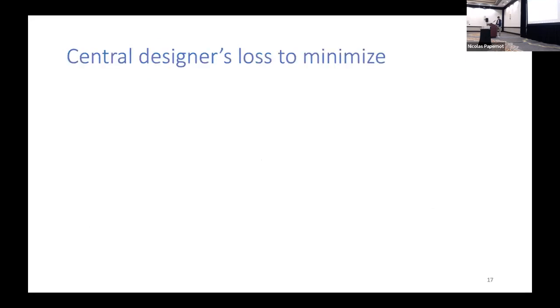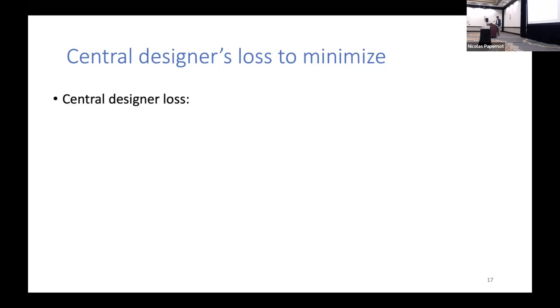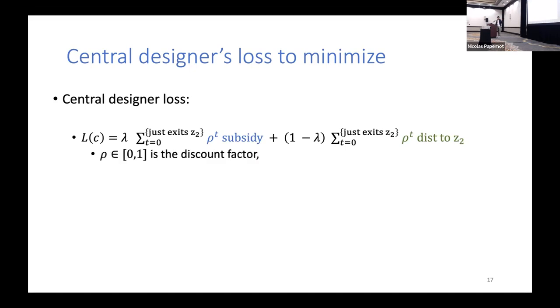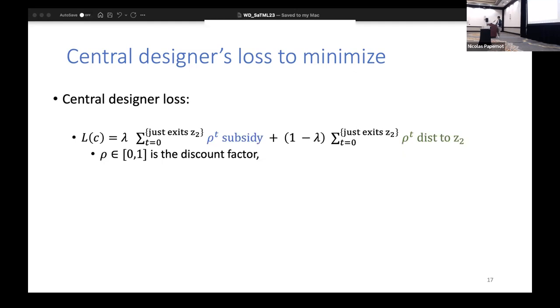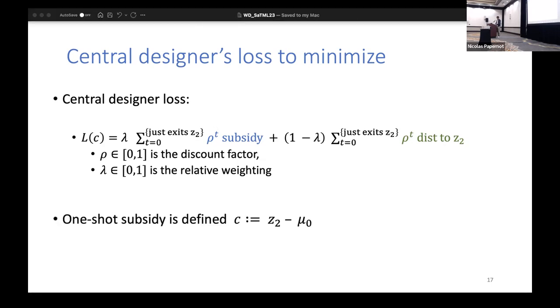Now we have all the building blocks set up to define what the central designer's loss is. It's trying to minimize the total subsidy that it provides while the distance to z₂ is also small. ρ here is a discount factor; it's how much you value current cost to future cost. λ is the relative weighting between the discounted subsidy and the distance to z₂. For example, you could provide much higher subsidies, but then the green term gets smaller while the blue term is higher - there's a trade-off captured by λ. For all our results, we need to define this one-shot subsidy: you provide all the subsidy that you have in one time step to take you to z₂ as fast as possible, reaching z₂ in one shot.